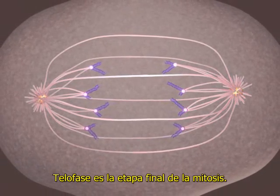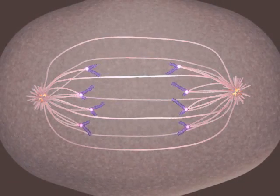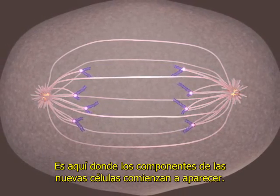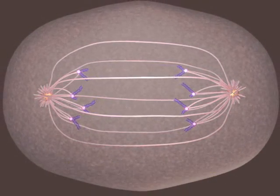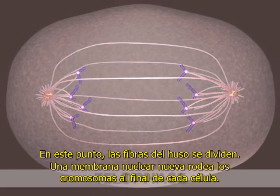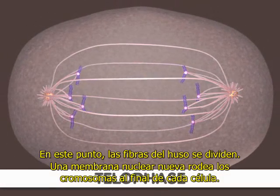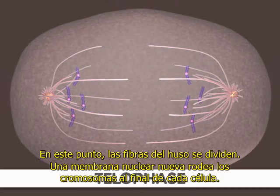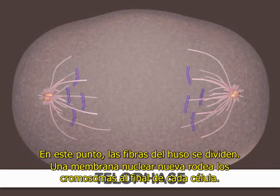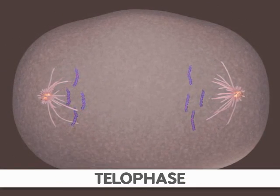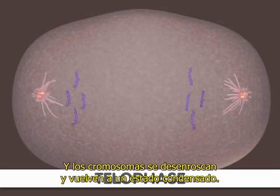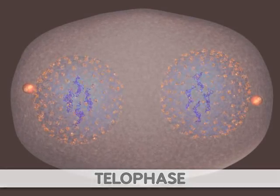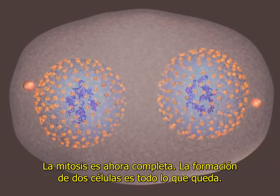Telophase is the final stage of mitosis. It is here the components of the new cells begin to appear. At this point, the spindle fibers are broken up. A new nuclear membrane surrounds the chromosomes at the end of each cell, and the chromosomes uncoil and return to an uncondensed state. Mitosis is now complete.